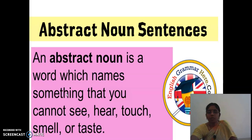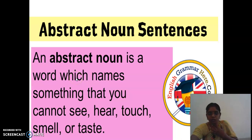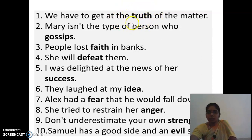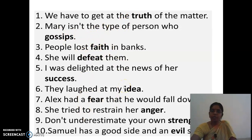For abstract noun, underline the heading, write in black pen, leave one line, then write: 'An abstract noun is a word which names something that you cannot see, hear, touch, smell or taste.' I gave 10 examples and you can write any 5. Underline the abstract noun in each sentence. Examples of abstract nouns: truth, faith, defeat, success, idea, fear, anger, strength, evil. Write your own 5 to 10 sentences using abstract nouns.